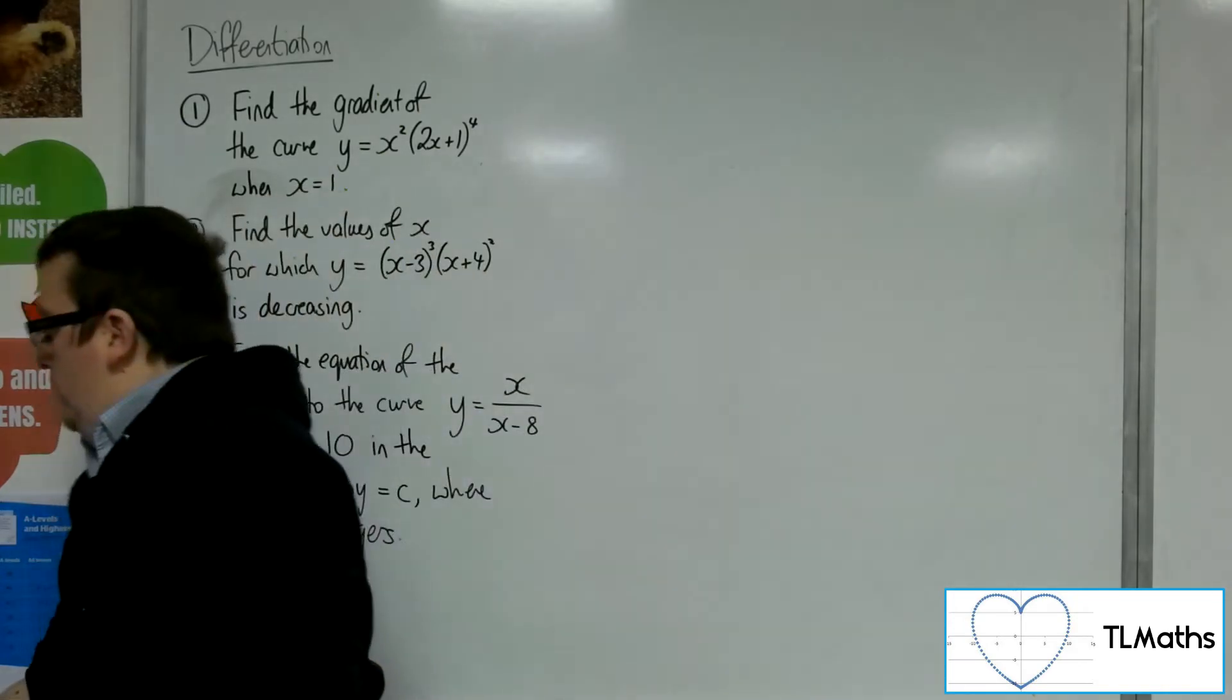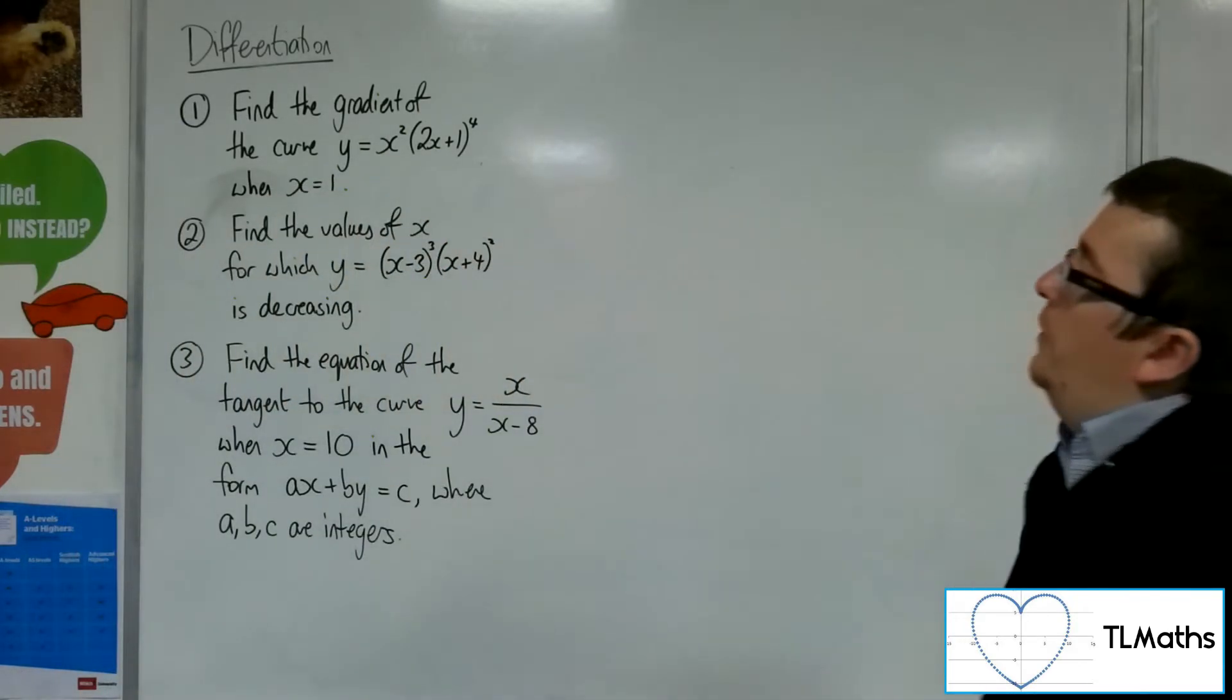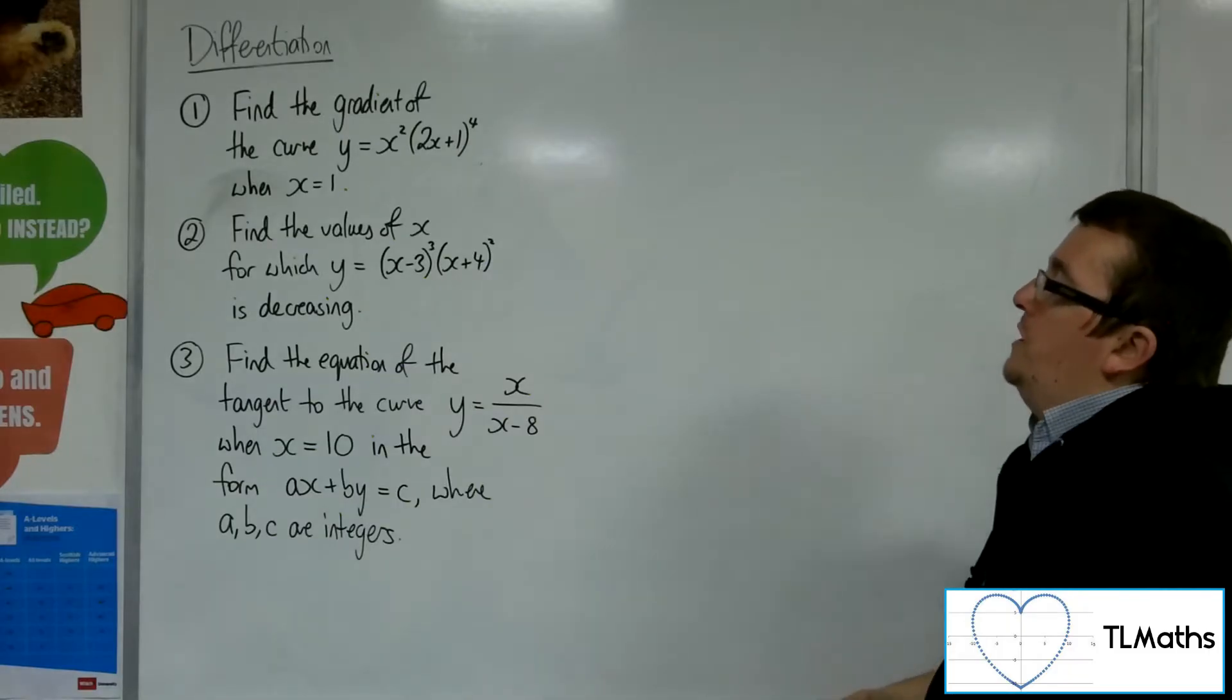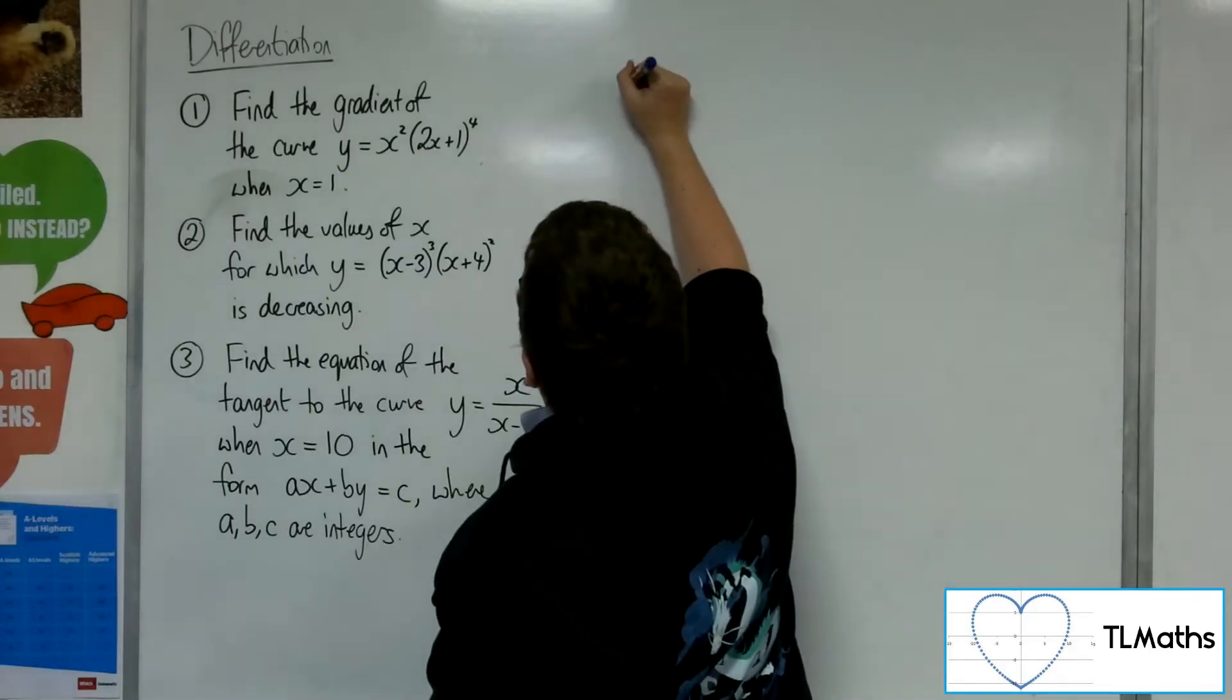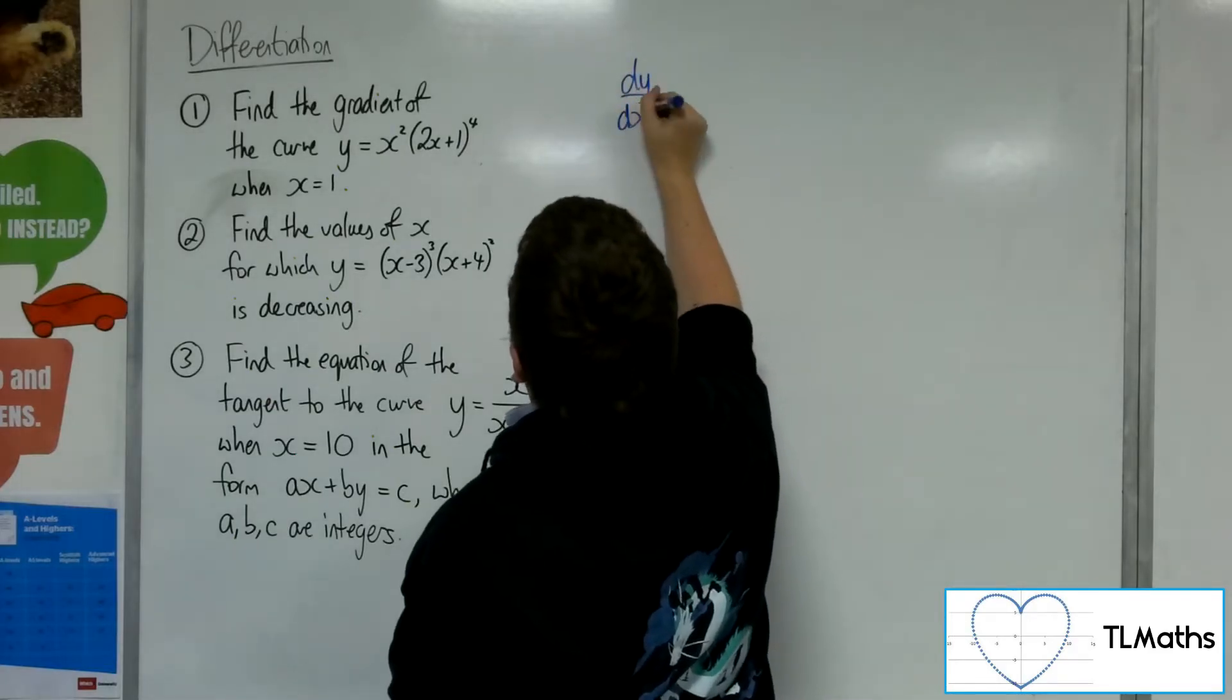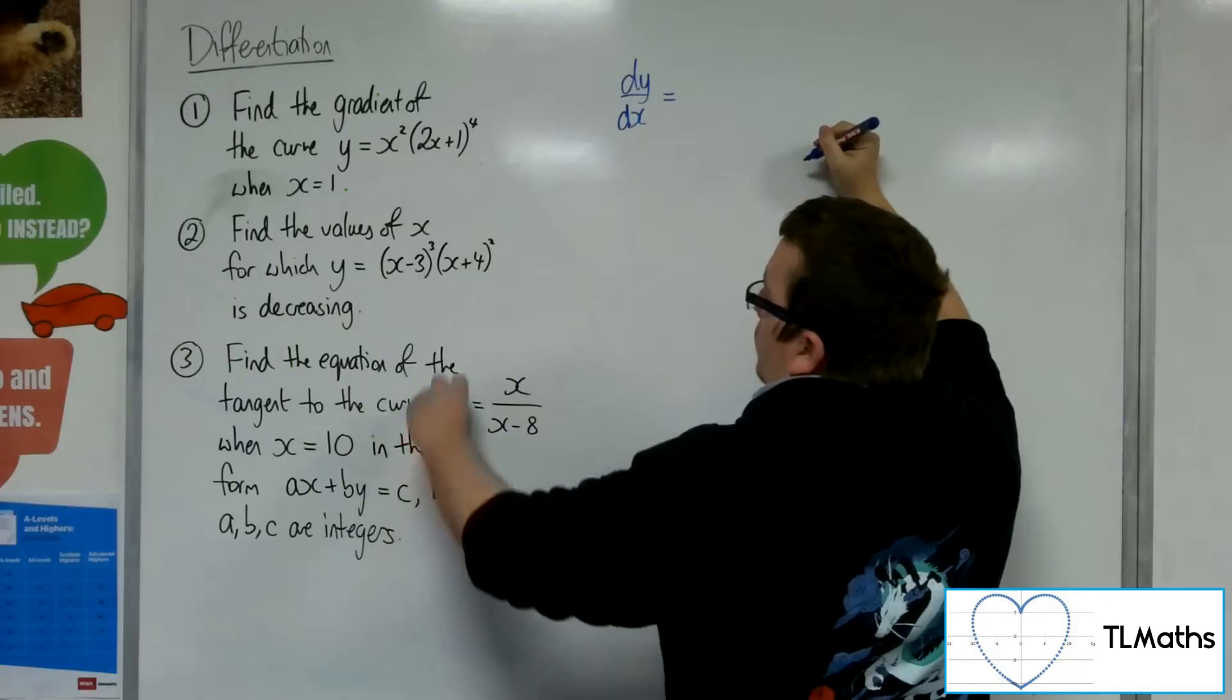So number two, find the values of x for which y equals x minus 3 cubed times x plus 4 squared is decreasing. So first of all, differentiate. And we're going to use the product rule again with a bit of chain rule.